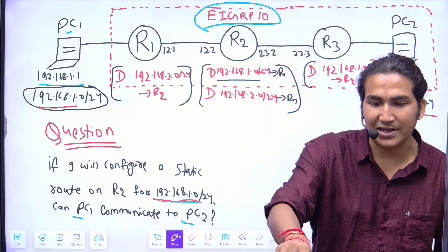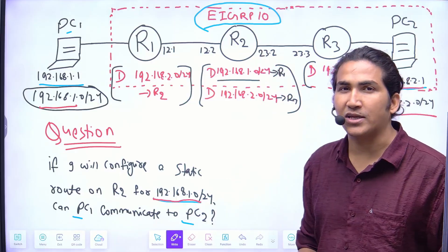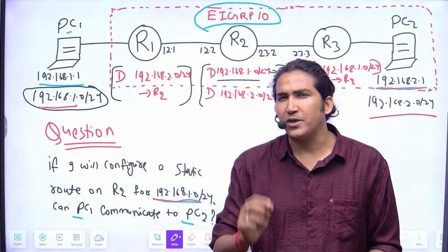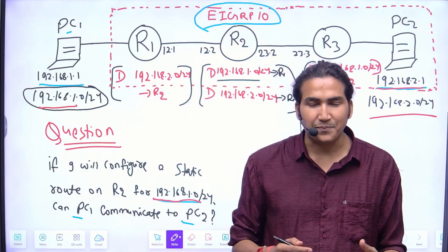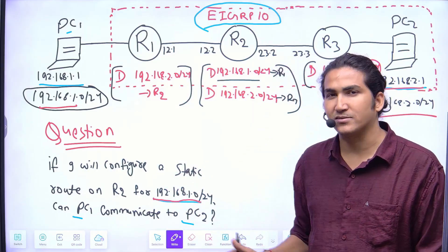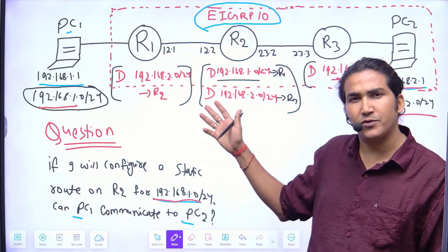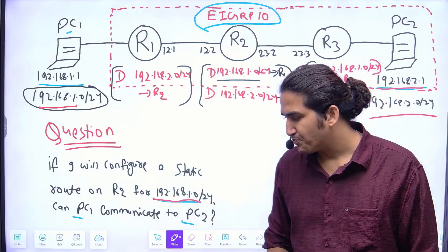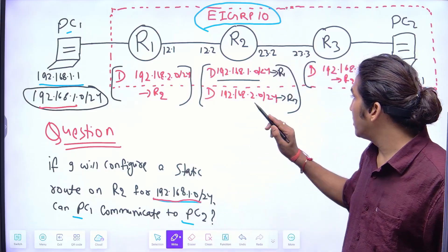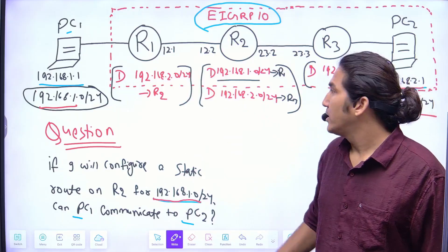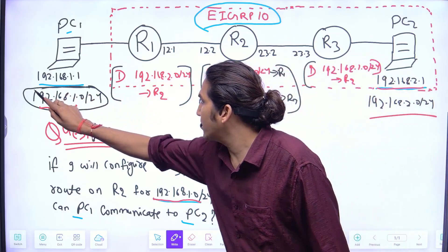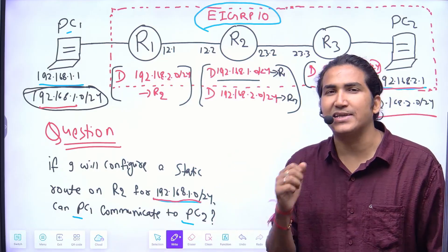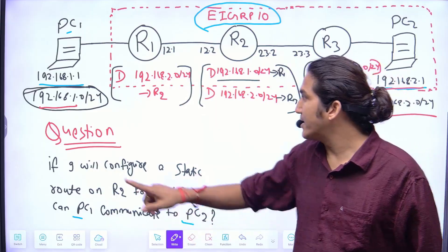Now let's understand what is happening. As soon as you configure static routing on R2, there is a concept called EIGRP zero successor. If you know the EIGRP zero successor concept you can understand this immediately. It is not only for a static route — if router 2 learns this network through any routing protocol whose AD value is lower than EIGRP, then router 2 will prefer that route over EIGRP.